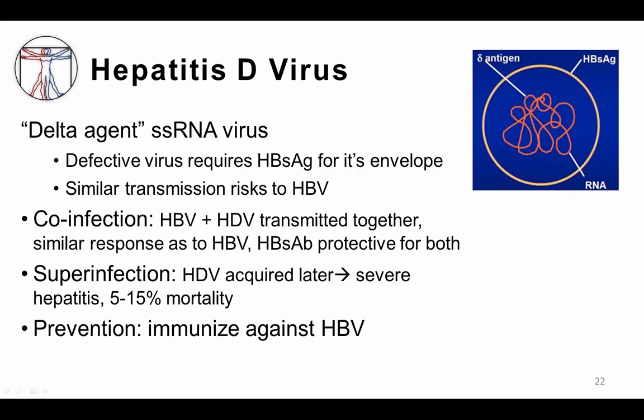Whenever patients have hepatitis B and hepatitis D acquired at the same time, this is called co-infection, and often hepatitis B antibody will develop and be protective for both viruses. However, if you acquire hepatitis D later after hepatitis B infection has been well established, this is called superinfection, and in these patients a very severe hepatitis can develop with a 5–15% mortality rate. There is no specific vaccine against the hepatitis D virus, however you can prevent it by vaccinating patients against hepatitis B.